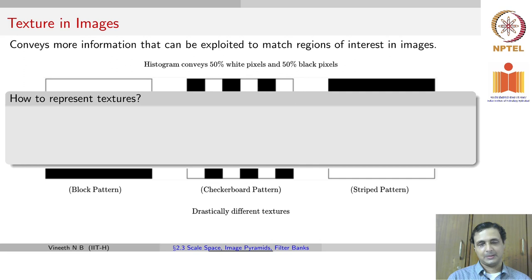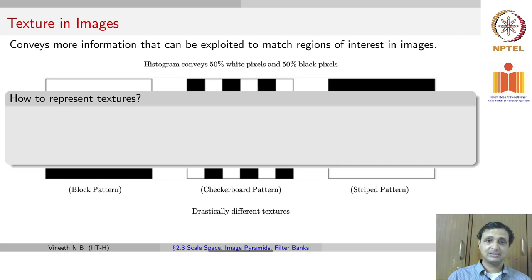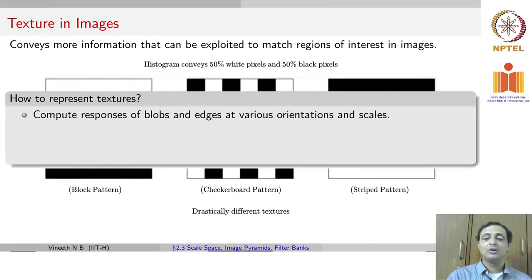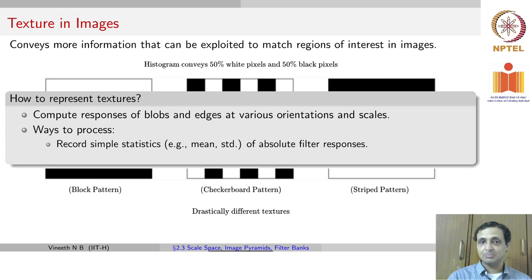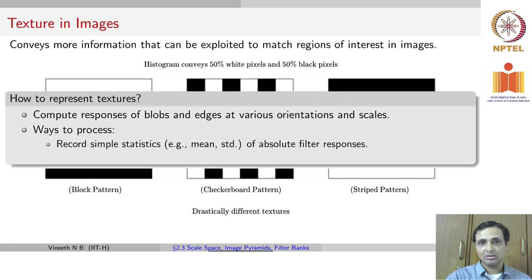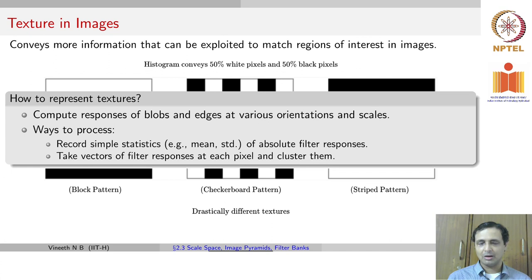How do we represent textures? We compute responses of blobs and edges at different orientations and scales. Specifically, we record simple statistics such as mean and standard deviation of absolute filter responses of an image. We can then take vectors of filter responses at each pixel and cluster them to represent textures. This is the general process of capturing textures in images.